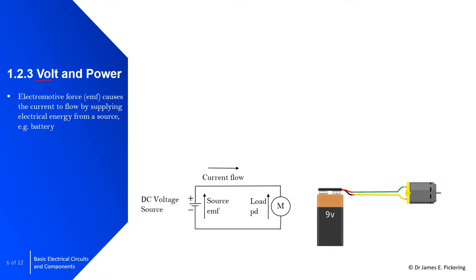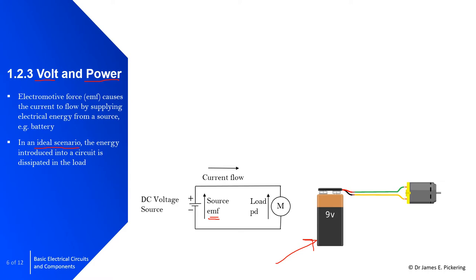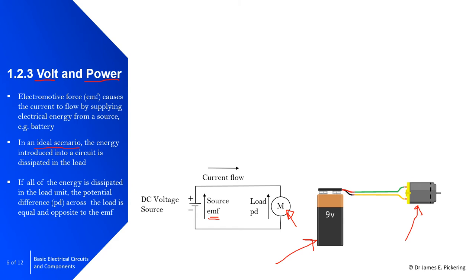Moving on to voltage and power. EMF — electromotive force — causes current to flow around the circuit by supplying electrical energy from a source, in this case a 9-volt battery. In an ideal scenario, the energy introduced into a circuit is completely dissipated by the load — here, the DC motor. If all energy is dissipated in the load, the potential difference (PD) across the load is equal and opposite to the EMF.